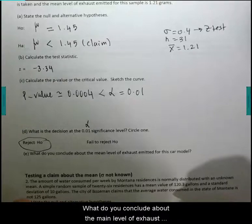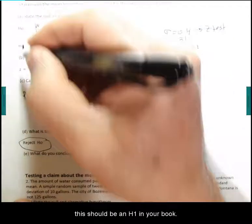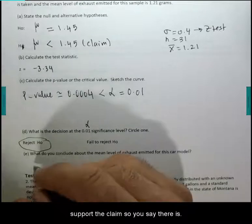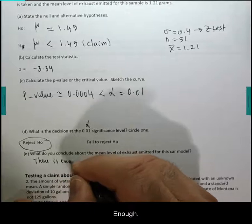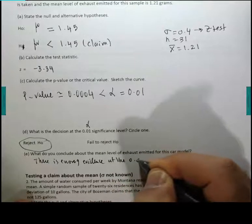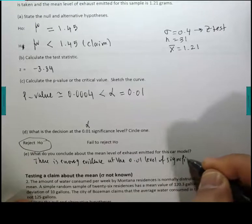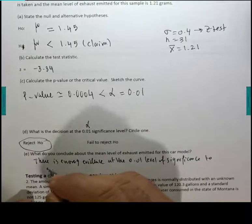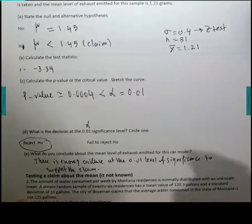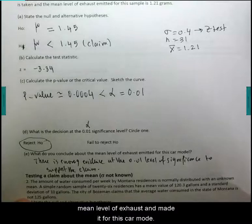What do you conclude about the mean level of exhaust emitted for this car model? If your claim is in H1 and you reject H0, that means you support the claim. So you say there is enough evidence at the 0.01 level of significance to support the claim that the new process reduces the mean level of exhaust emitted for this car model.